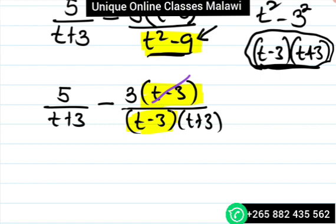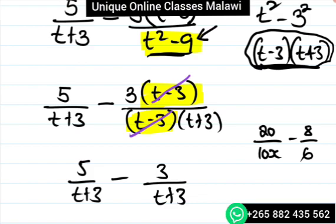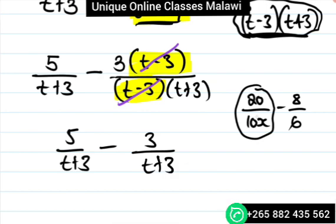You cancel, so t minus 3 cancels. You would have 5 over t plus 3 then minus 3 over t plus 3. It's good when you get to simplify this.